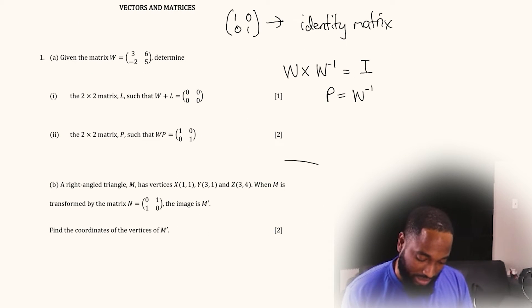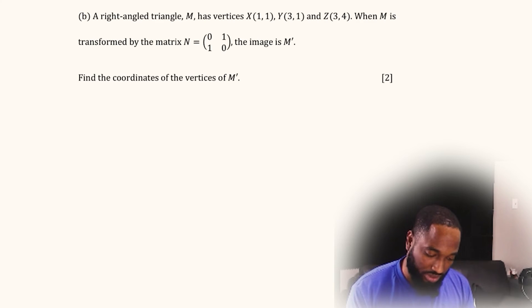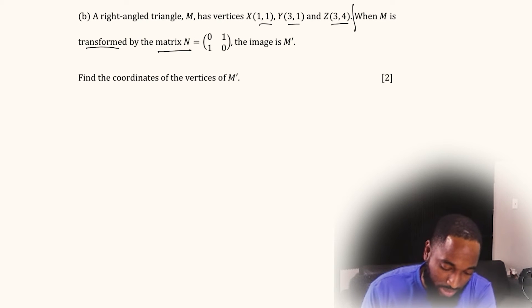Let's go into the last part of this question, which is dealing with a topic we call matrix transformation. The right angle triangle M has vertices—what does vertices mean? These pointy things here. When M is transformed by the matrix N, the image is M prime. What you should know: transformation matrix looks like this. You have M multiplied by whatever the transformation matrix is, and this will give us the image. In this case, you'll be using two by one matrices, so it would be better to write this as the transformation matrix by the individual coordinates.